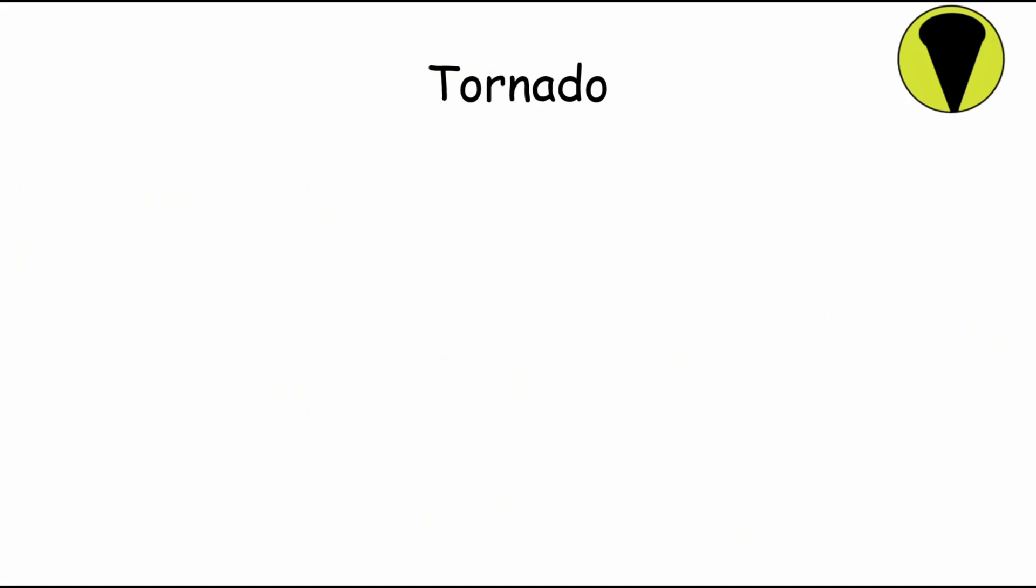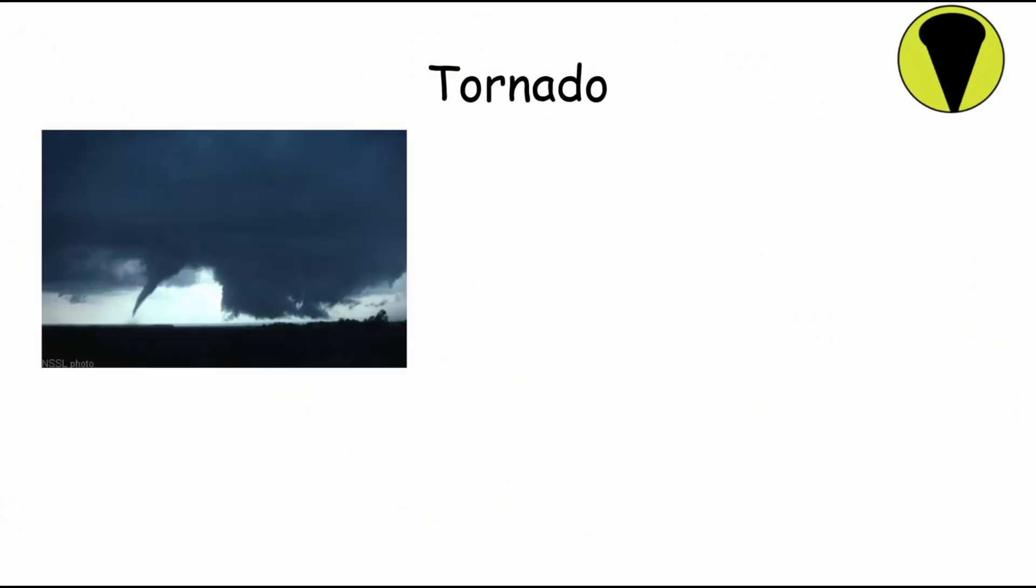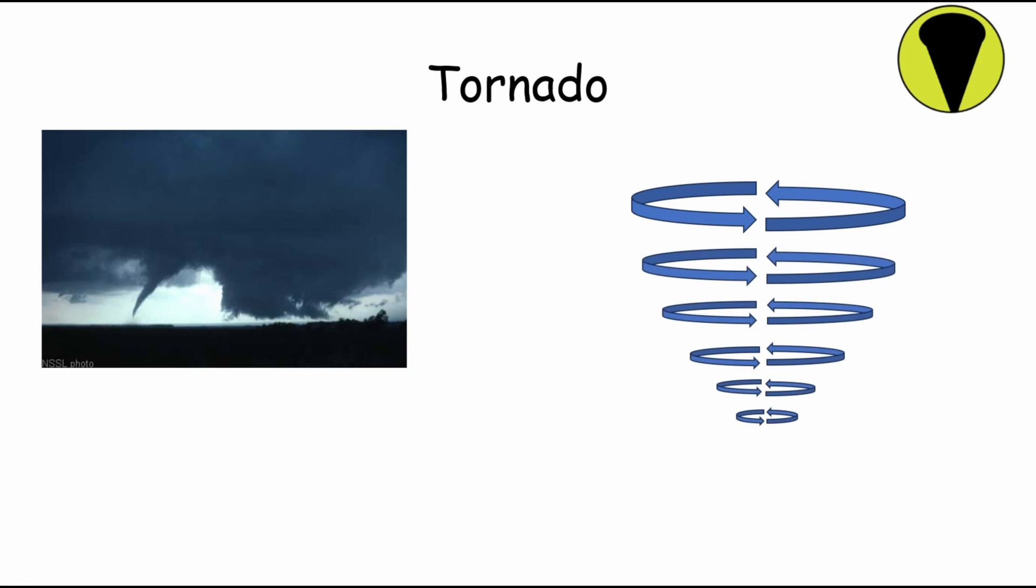A tornado is a rapidly rotating column of air extending from a thunderstorm to the ground, characterized by its destructive potential and often unpredictable behavior. Forming within severe thunderstorms, tornadoes are generated by a combination of atmospheric instability and wind shear, which causes air to rotate horizontally. When this rotation is tilted vertically by updrafts within the storm, a tornado can develop. Tornadoes can vary in size and intensity, with wind speeds ranging from relatively mild to over 300 mph in the most extreme cases.